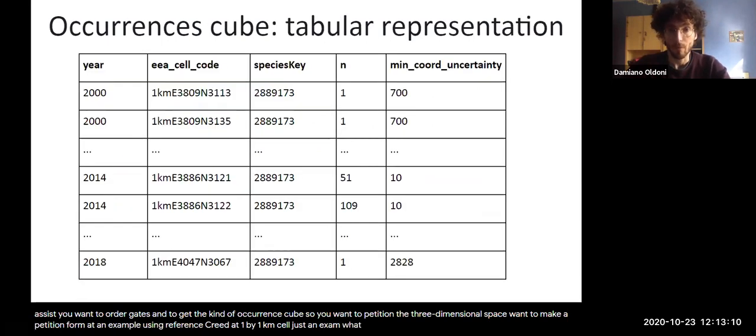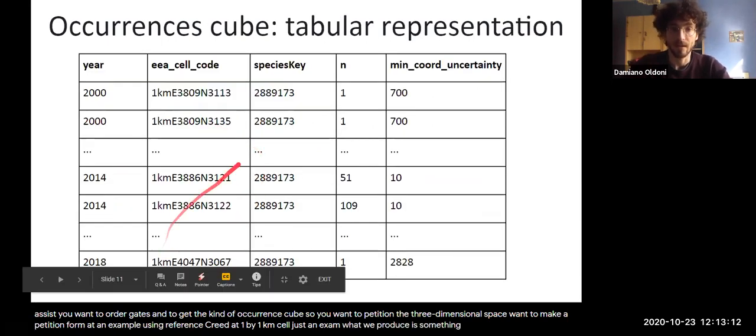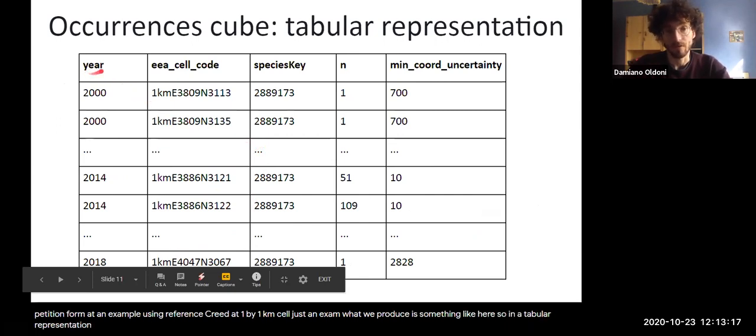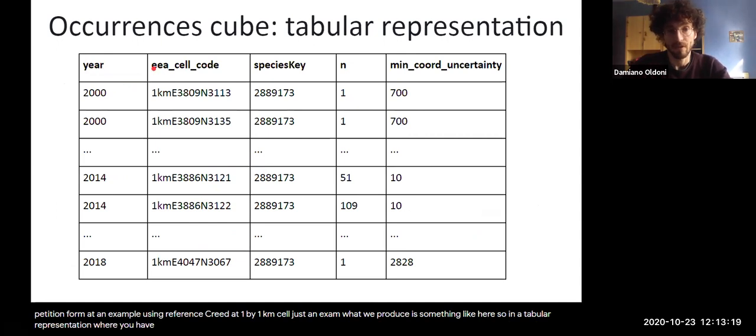What we produce is something like here presented, so in a tabular representation, where you have years, the three dimensions so time, space, and taxonomy, and the number of occurrences for each of these three-dimensional cells.